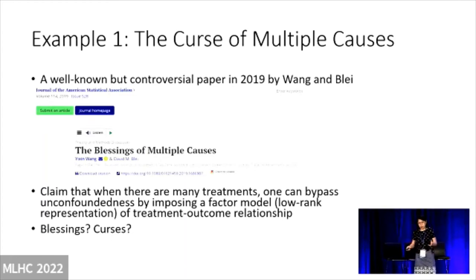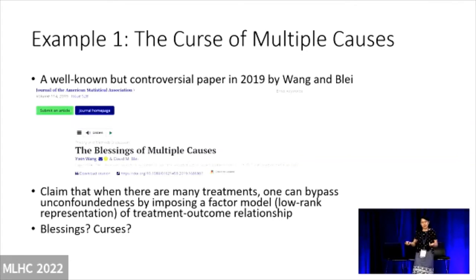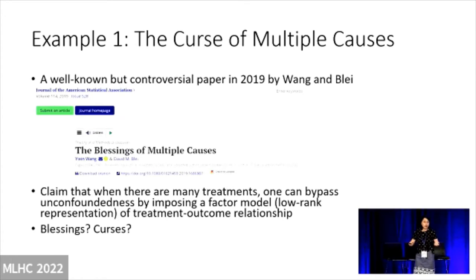So back to what Wang and Blei's paper claims. Because people are uncomfortable with unconfoundedness, Wang and Blei say: no problem — we can bypass the unconfoundedness assumption. When you have many treatments — not just A and B, but A, B, C, D, E, F, G — they impose a factor model, a low-rank representation, which is a common machine learning technique, on the treatment-outcome relationship. Because of that, they claim we can bypass unconfoundedness. They call it the blessing — that's why the paper's original name is the Blessings of Multiple Causes.